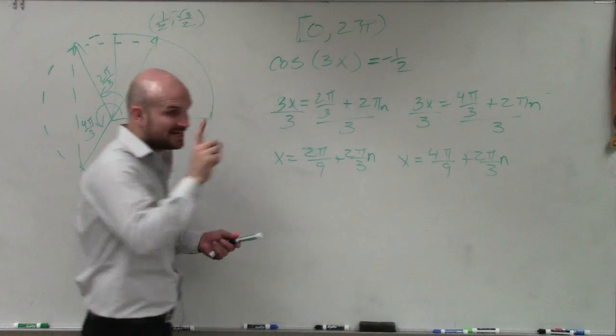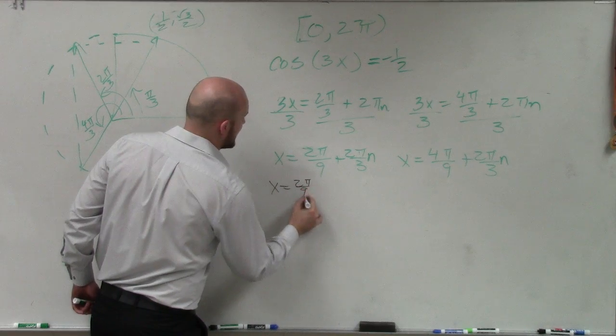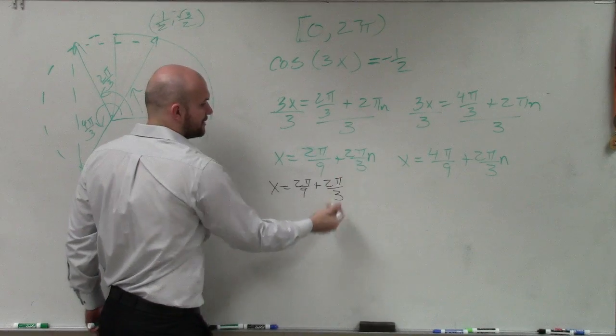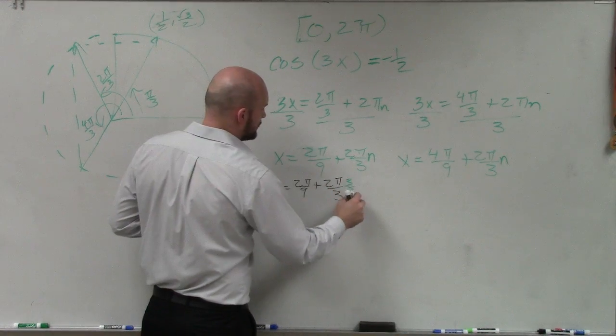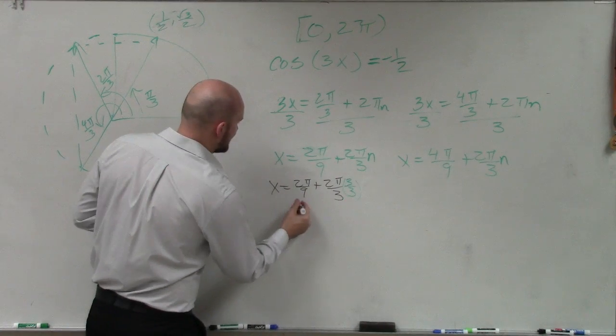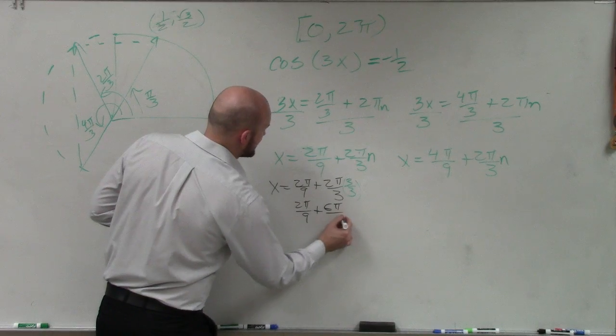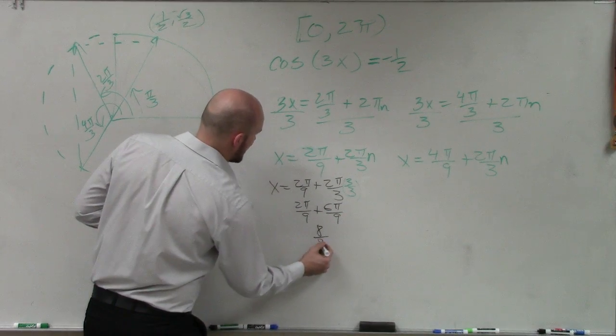So let me show you an example. Let's pretend n is 1. So that means x equals 2π over 9 plus 2π over 3. n is 1. So therefore, to get common denominators, I multiply by 3 over 3. And I have 2π over 9 plus 6π over 9. Well, that equals 8π over 9.